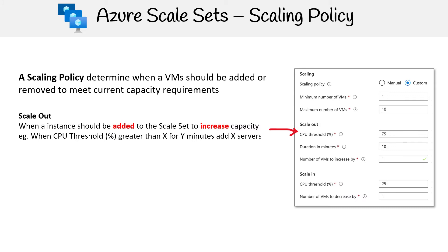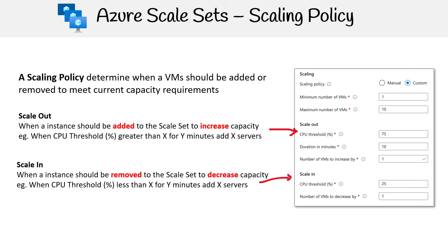You choose your metric, which is hard-coded in this case to CPU threshold. You also choose the duration and how many VMs you want to add.